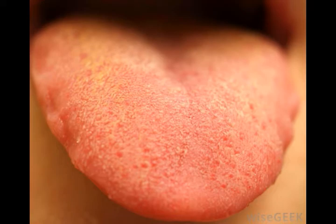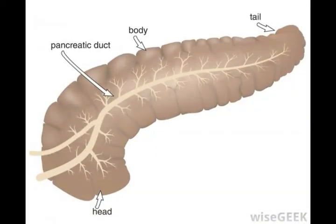Despite their similarity, salivary and pancreatic amylases are not interchangeable. Pancreatic amylase usually finishes the job that salivary amylase began. Though the structure of amylase is usually simple, there are some variants that are significantly more complex than most.